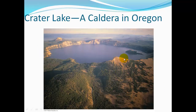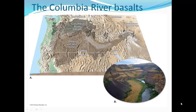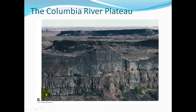Crater Lake contains Wizard Island — a small volcano created by additional volcanic activity after the original eruption that formed the caldera. The Columbia River Basalts formed from fissures in the land erupting basaltic lava flows across this region, forming successive lava flows that solidified into nice, solid rock layers visible today.